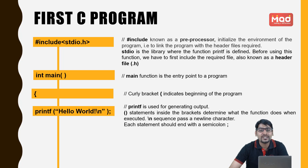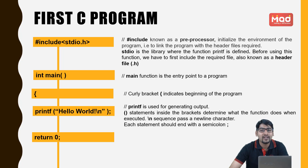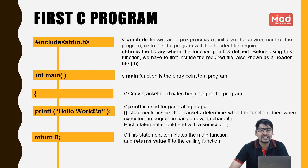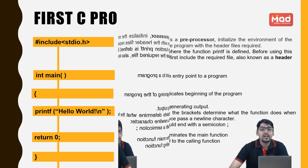This is followed by the \n escape sequence, which will pass a newline character, and this is followed by a semicolon. Then comes the return 0 statement, which will return a value 0 to the calling function. Lastly comes the closing bracket, which will terminate the main function.